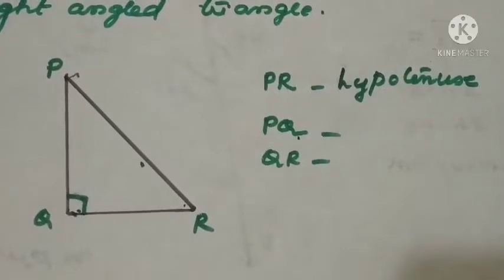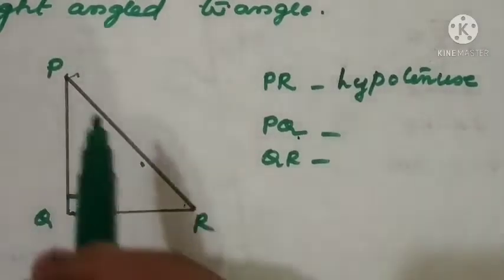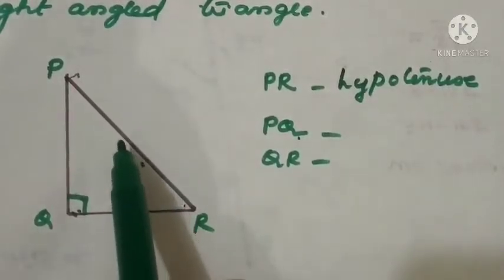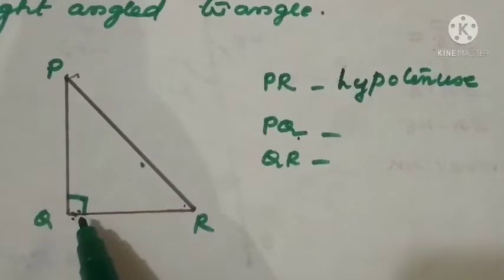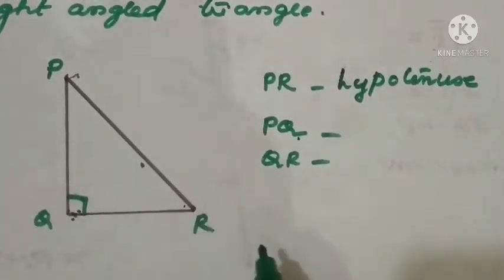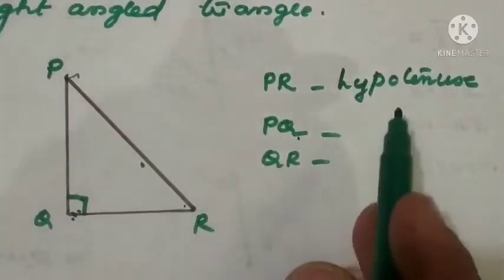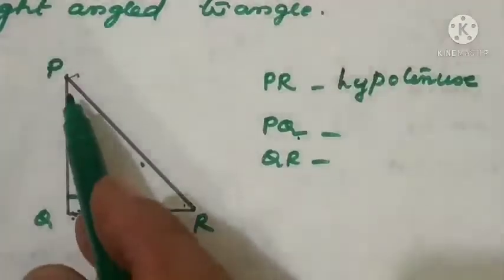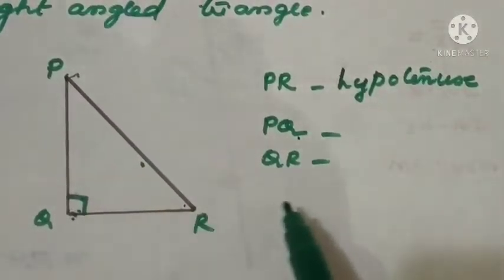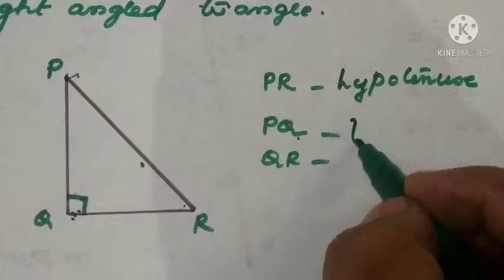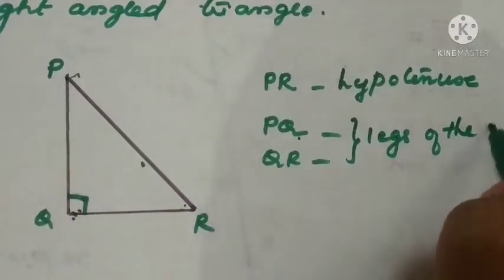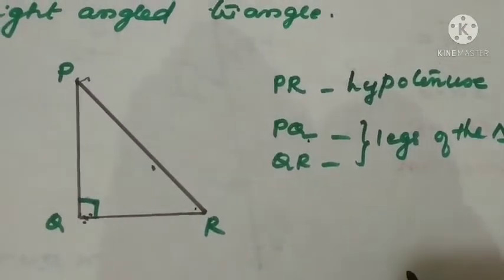Let us see a diagram — triangle PQR. In triangle PQR, angle Q equals 90 degrees. Which is the side opposite to angle Q? That is PR, so PR is called the hypotenuse. The other two sides are PQ and QR; they are called legs of the triangle.